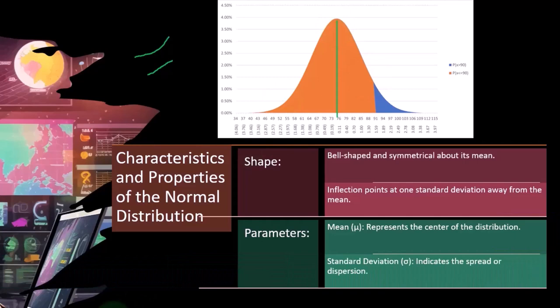Standard deviation, which can be represented with the Greek letter sigma, indicates the spread or dispersion. Just like we've seen in prior sections, the standard deviation represents the spread of the data.